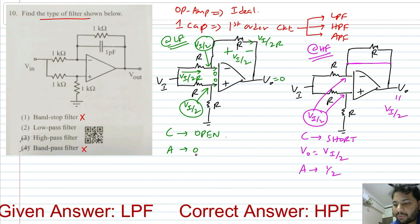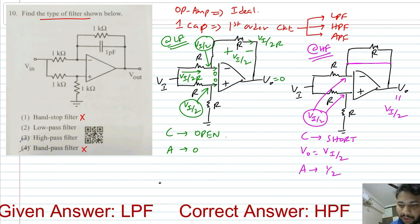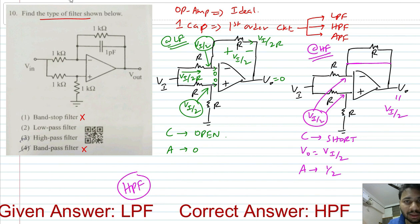At low frequency the gain is 0, and at high frequency the gain is one-half. So clearly it is a high-pass filter. The correct answer is option C, high-pass.